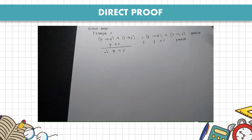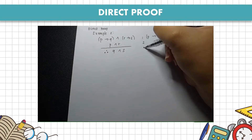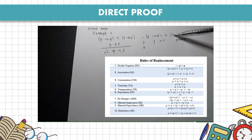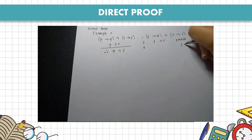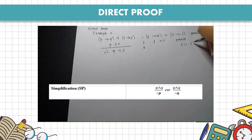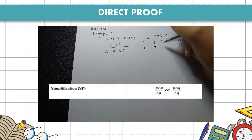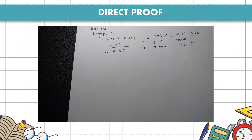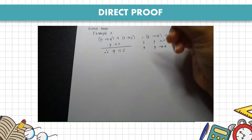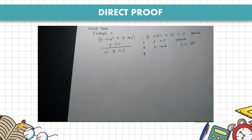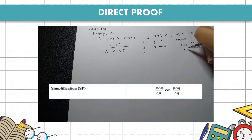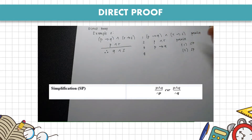We look at the two premises and find applicable rules of inference or replacement. Premise 1 resembles simplification (SP), so we get P implies Q. Next, premise 2 also uses simplification, giving us P.